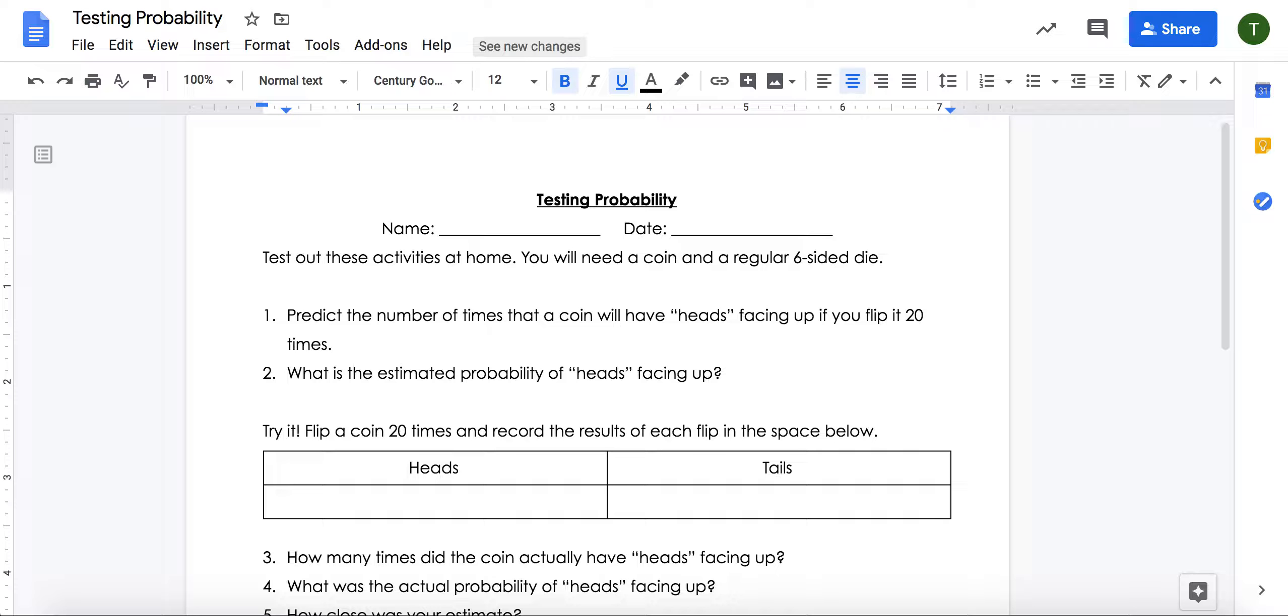So if you were to flip a coin once, think first, what is the probability of having heads facing up? We know that we have two options, heads or tails, which means you have a 50% chance or one out of two or one half of heads facing up. Also, you will have a 50% chance or one out of two or one half of tails facing up.